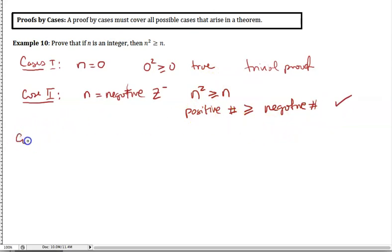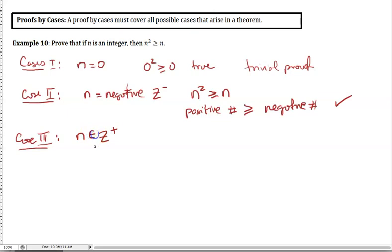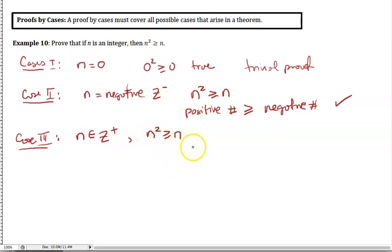Case 3 — the last set of numbers left for integers are positive integers. For a positive integer, I want to show that n² ≥ n. This makes common sense, but let's prove it in math. This calls for a proof by induction.